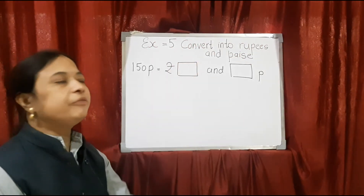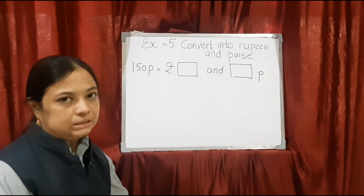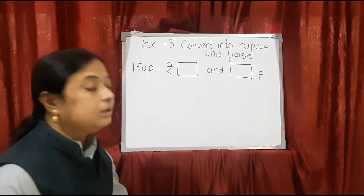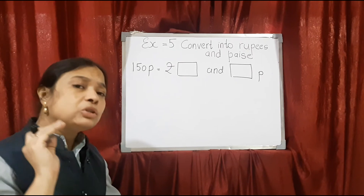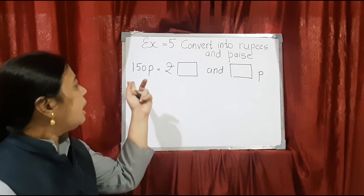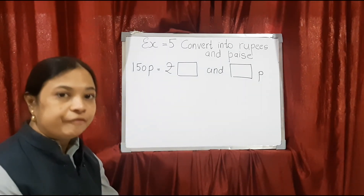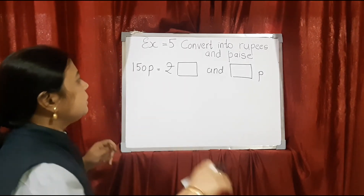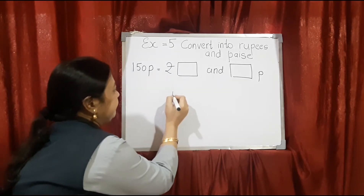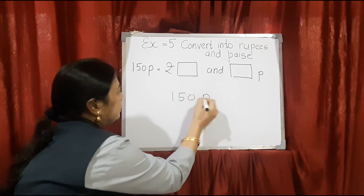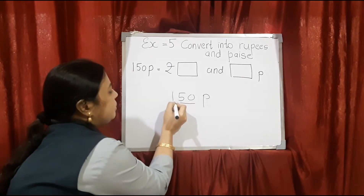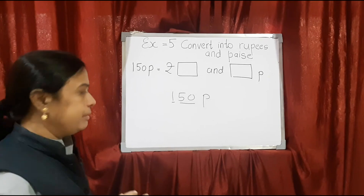Next comes exercise number 5 — convert into rupees and paise. Here, 150 paise is given. Previously the numbers were 200, 300, 400, 500 — double zeros at the end. But now, as you can see, at the end of the number is 50. Whenever this type of number comes and you have to convert into rupees and paise, the last 2 digits are of paise and whatever is left — whether 1, 2, or 3 digits — that is of rupees.